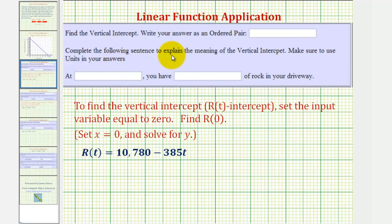We're first asked to find the vertical intercept as an ordered pair and then express the meaning of the vertical intercept. To find the vertical intercept, or in this case the R(t)-intercept, we set the input variable equal to zero, meaning we find R(0).